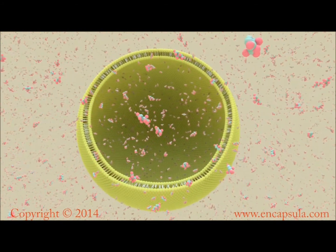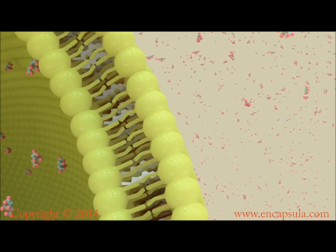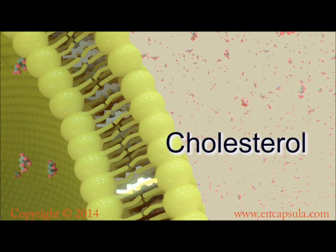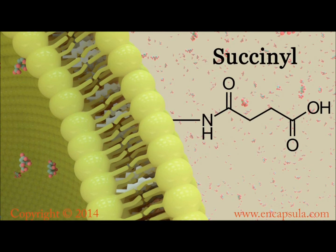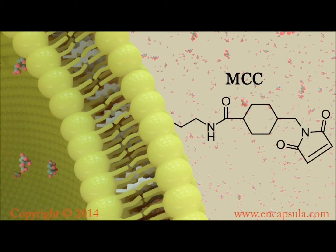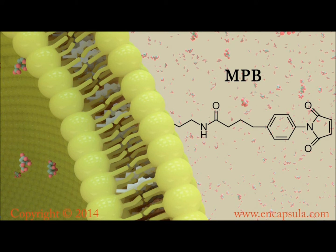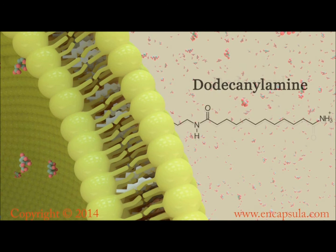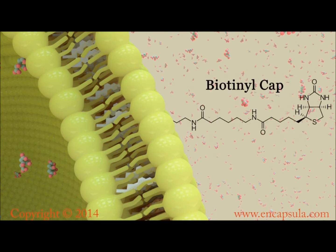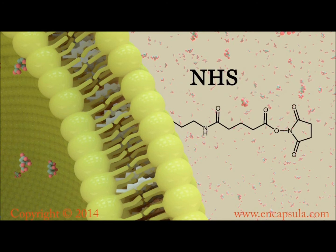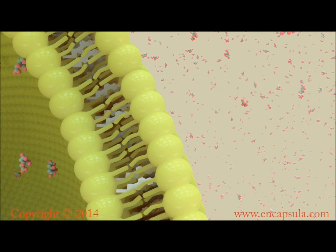These non-pegylated liposomes are made in a citrate buffer. The liposomal membrane contains both L-alpha-phosphatidylcholine, an unsaturated lipid, and cholesterol. The reactive lipids such as succinyl, glutaryl, MCC, MPB, PDP, dodecanoyl, dodecanoyl amine, biotinyl, biotinyl cap, caproyl amine, or NHS are attached directly to the head group of an unsaturated lipid, which is incorporated into the liposomal membrane.